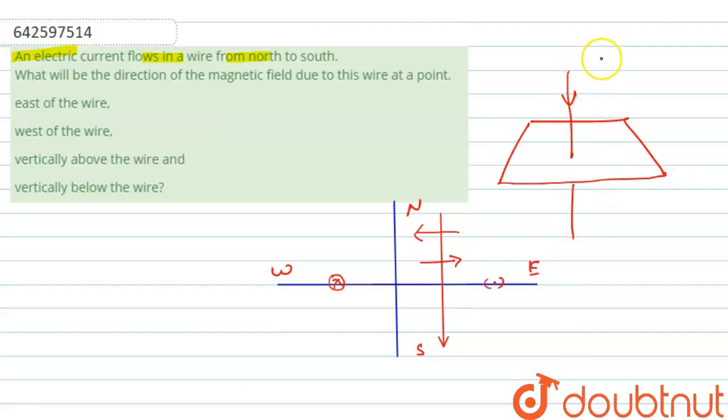The current is coming from north to south. Then magnetic field directions with the help of right hand thumb rule will be like this. So this is east, this is west, and vertically above.